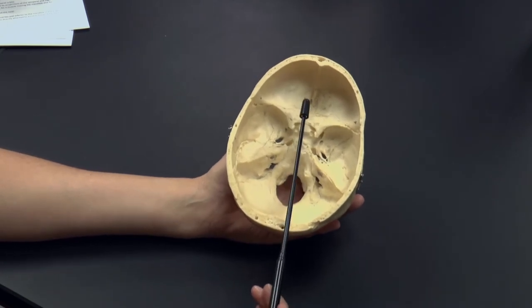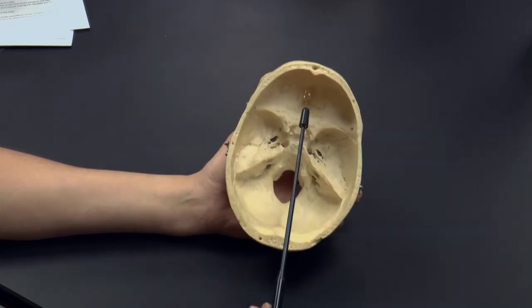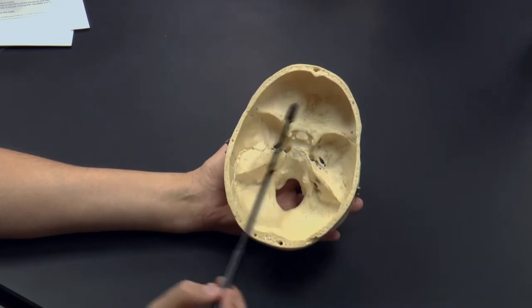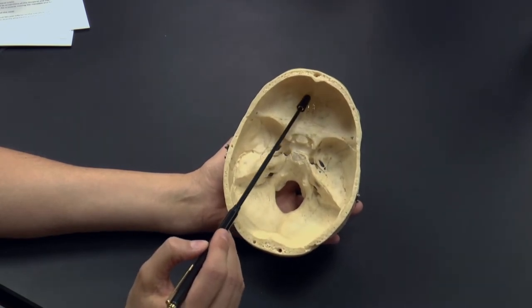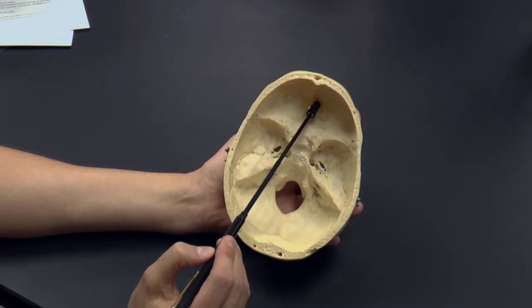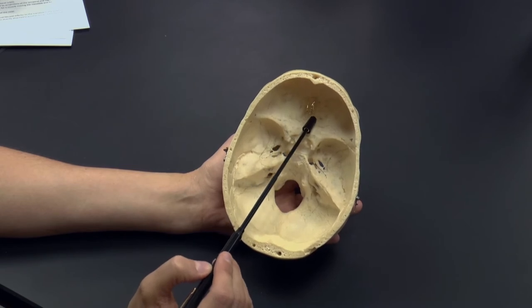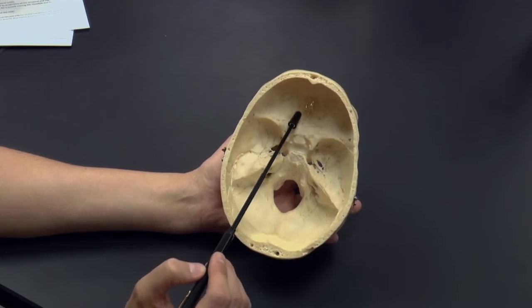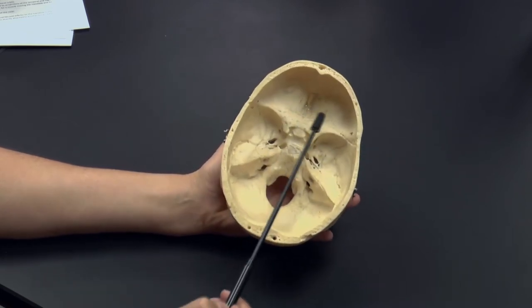A bone we didn't look at, because you really only get a good view of it from the internal anatomy or from the orbit of the eye, is this bone here, right on the midline. And it's called the ethmoid bone. And the ethmoid bone has three important parts that we can look at.